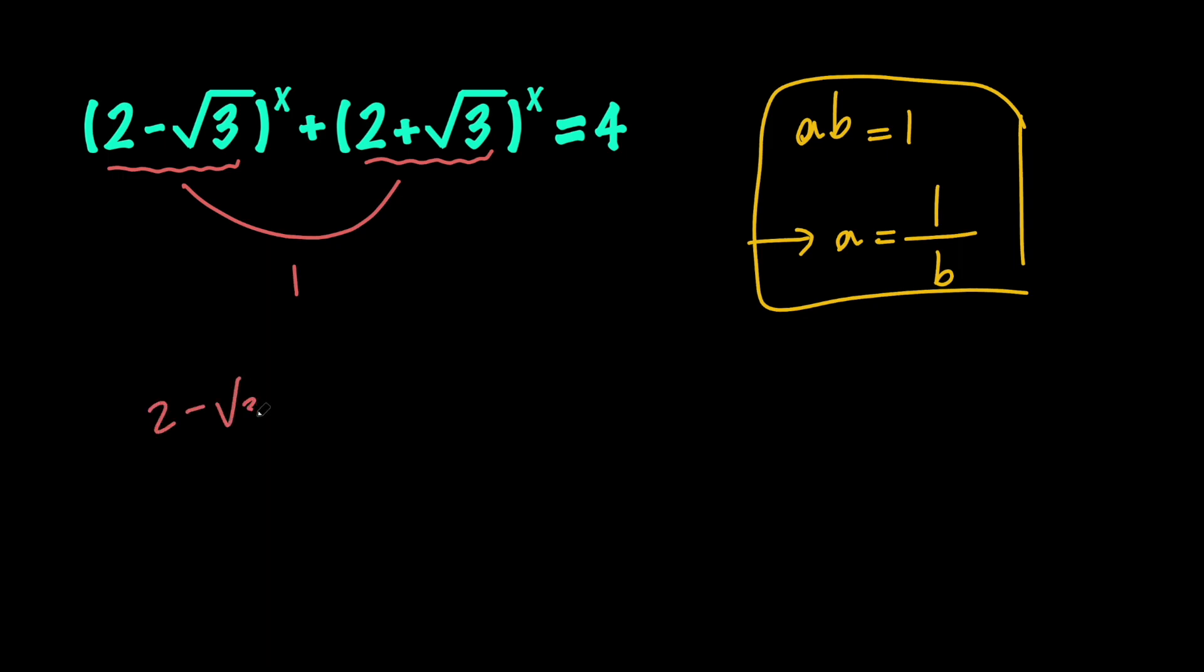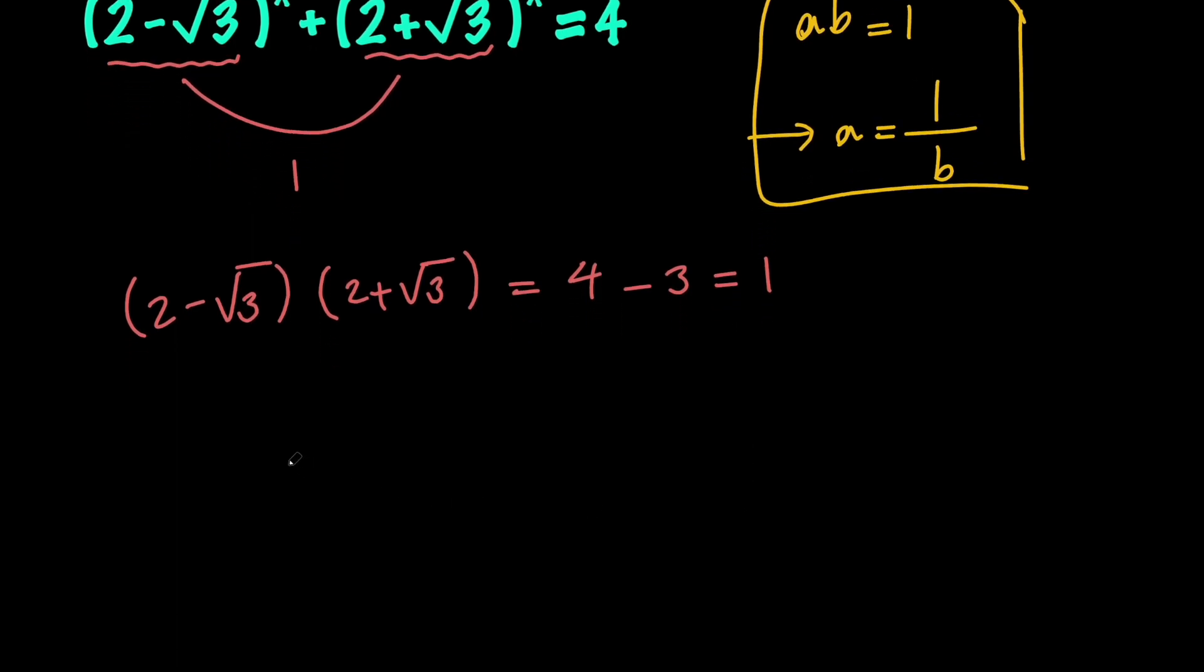Because 2 minus root 3 times 2 plus root 3 is equal to 4, which is 2 squared, minus 3, which is root 3 squared, which equals 1. So the product of these two numbers is 1. So I can say that 2 minus root 3 is the reciprocal of 2 plus root 3, or 2 minus root 3 is equal to 1 over 2 plus root 3.